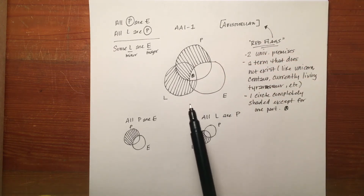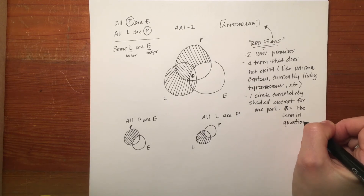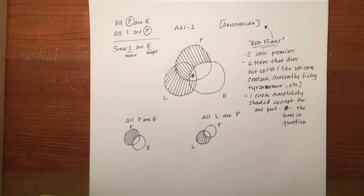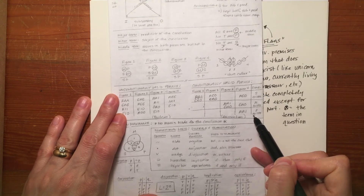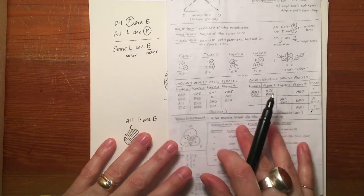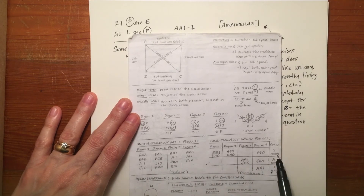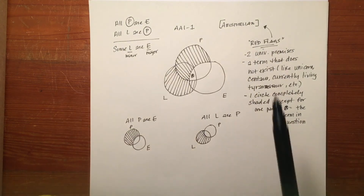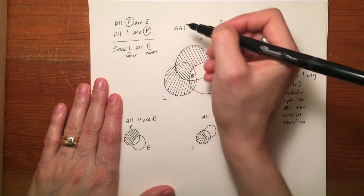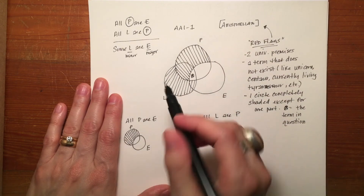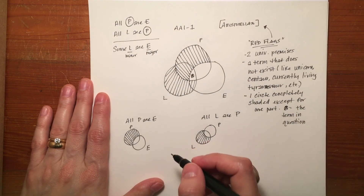That X in a circle represents the term in question. It matches up with the required condition on the conditionally valid forms chart. Looking at AAI-1 on the unconditionally valid forms chart, you can see it's not there, but it is on the conditionally valid chart, and the required condition is that S exists. This matches up with our circle that's been completely shaded except for one part — so it could have been conditionally valid from the Aristotelian perspective, but is not. It is in fact invalid from both perspectives.